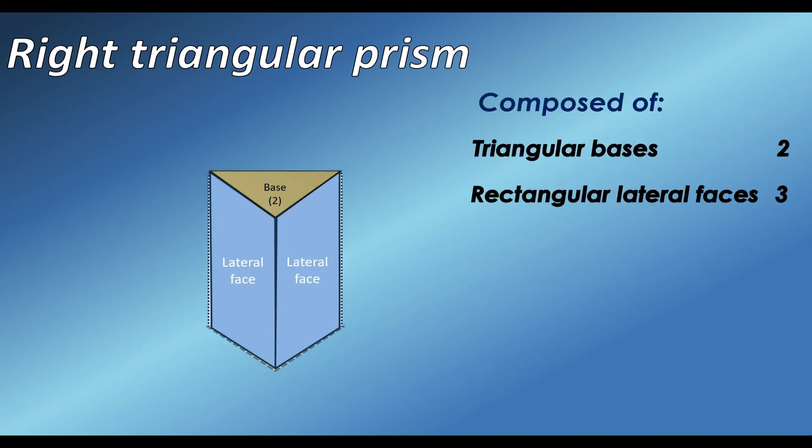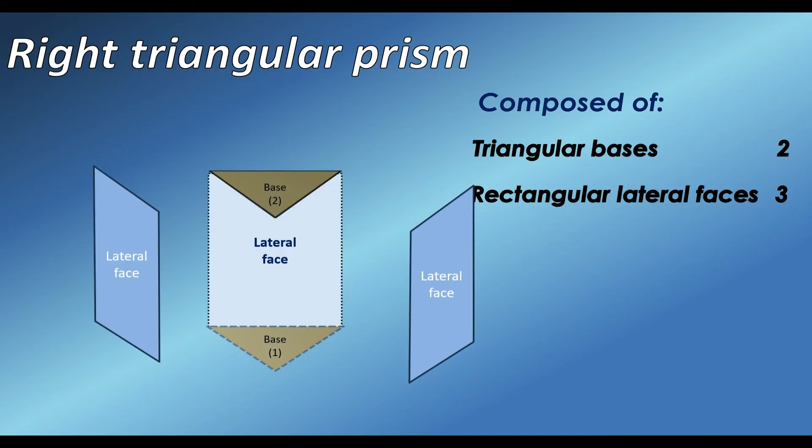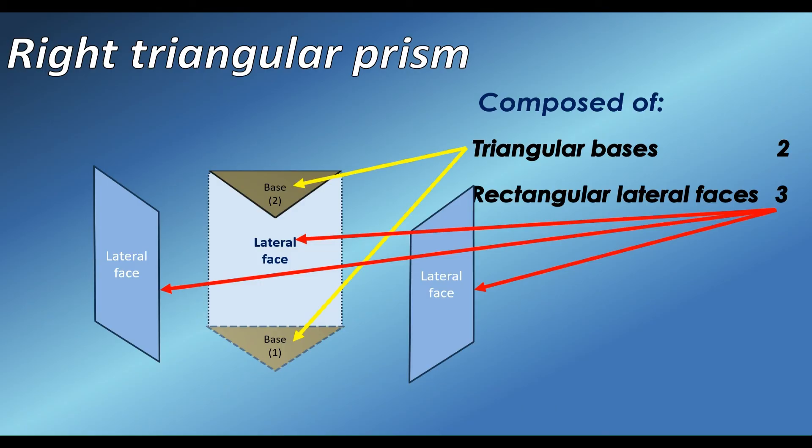The other 3D-shaped solid figure is a right triangular prism. A right triangular prism is a three-sided prism. It is a polyhedron. The right triangular prism is composed of 2 triangular bases and 3 rectangular lateral faces. Let's check each dimension of this right triangular prism.